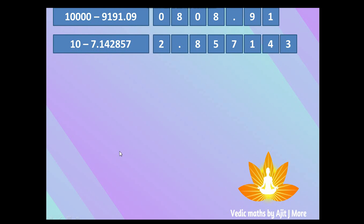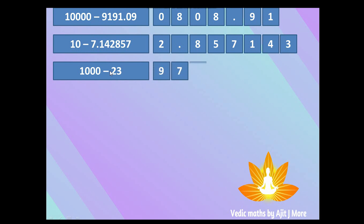Many might wonder why we are finding base and complement — don't worry, we'll use this concept in Vedic multiplication tricks. Next example: 1000 minus 23. There are three zeros but only two digits, so we prepend a zero to get 023, then apply Nikhilam: 9−0=9, 9−2=7, 10−3=7. The complement is 977.